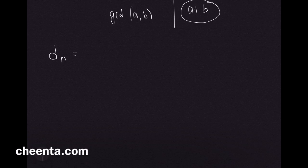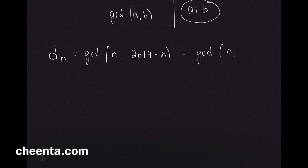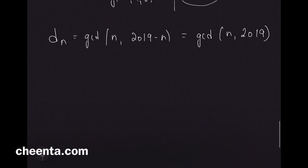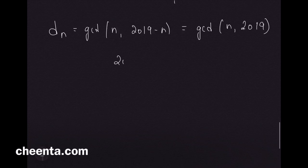Coming back to this problem, d_n = GCD(n, 2019 minus n) = GCD(n, 2019), using that little trick we just applied. We note that 2019 = 3 times 673.